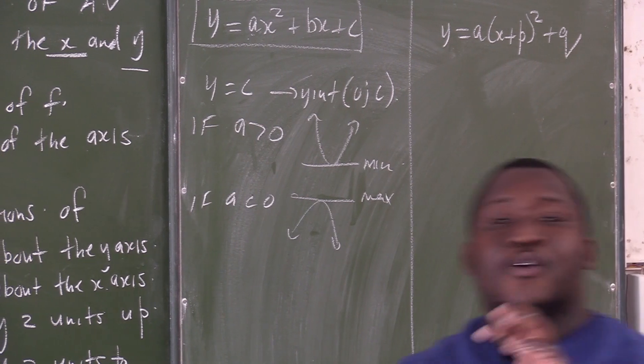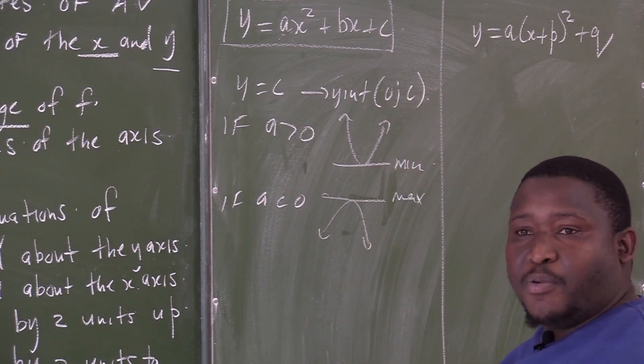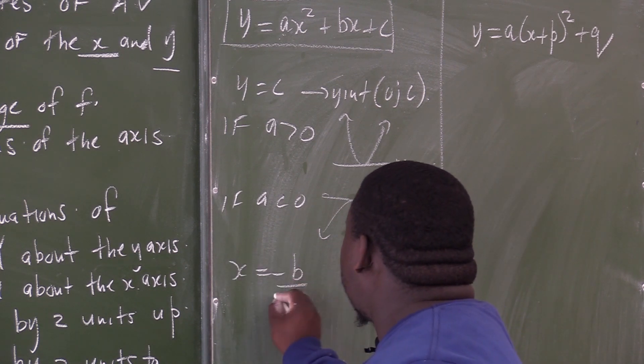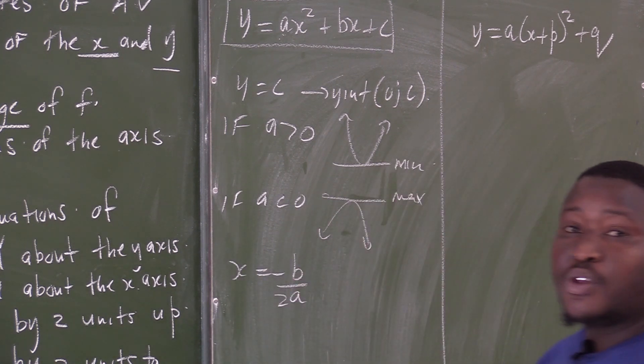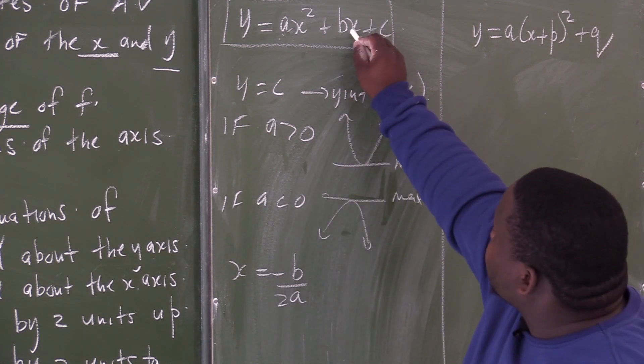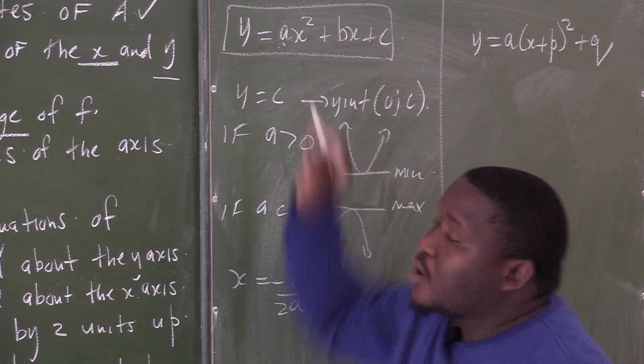How to find the coordinates of the turning point of a parabola? You use x equals to minus b over 2a. This will give you the value of x at the turning point. What is b? The coefficient of x. What is a? The leading coefficient.